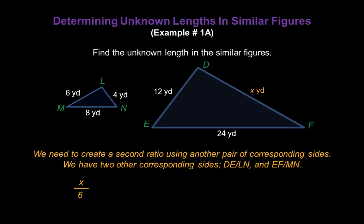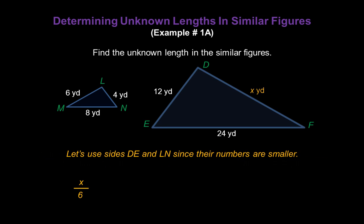We can use either one of these two pairs. Let's use sides DE and LN though, since their numbers are smaller. So let's go ahead and set up that ratio now of DE over LN.